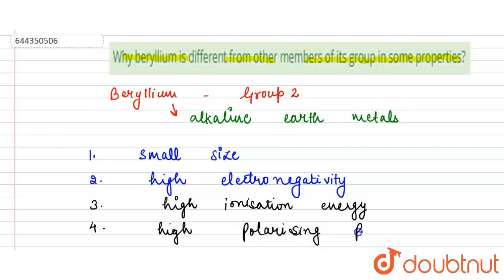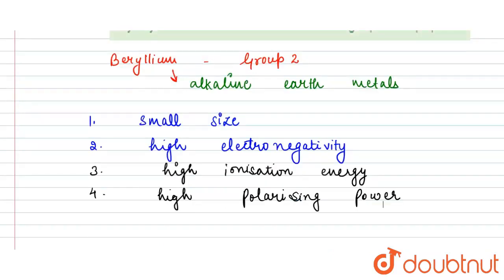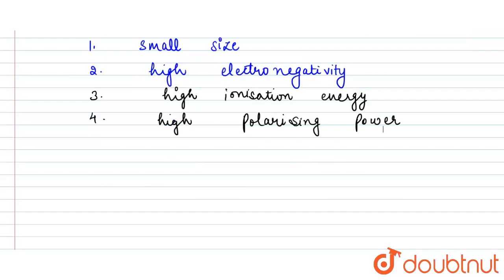And it differs in the properties like it exhibits the coordination number 4. Coordination number 4, because it has the absence of d-orbitals. Absence of d-orbitals.